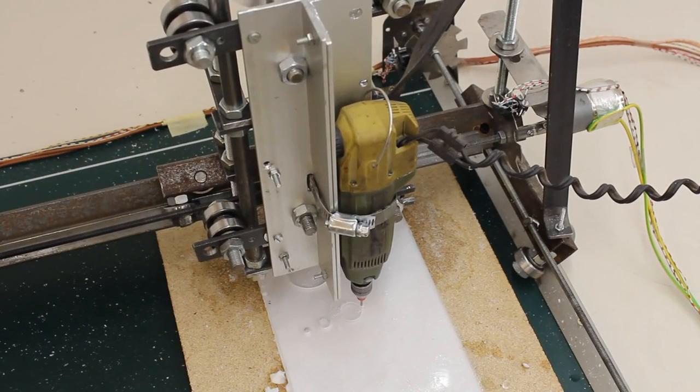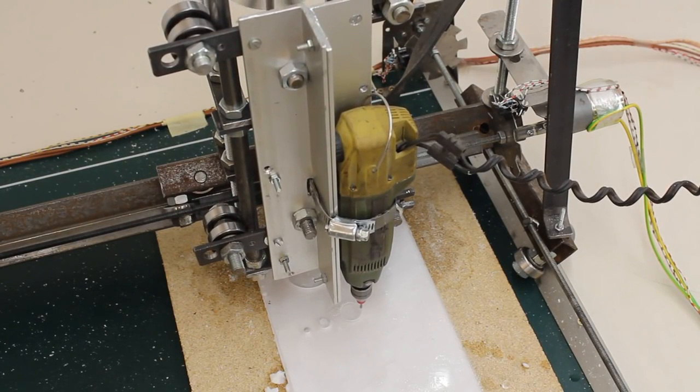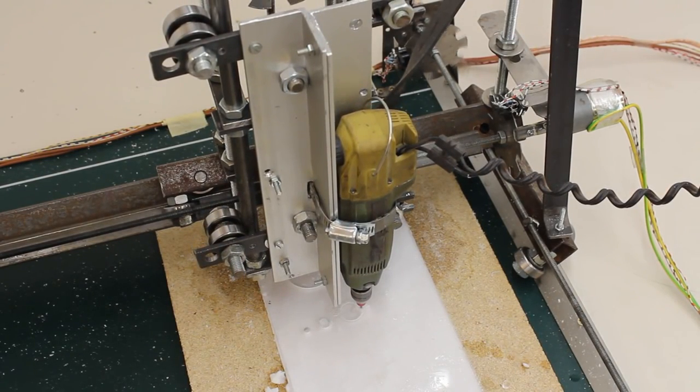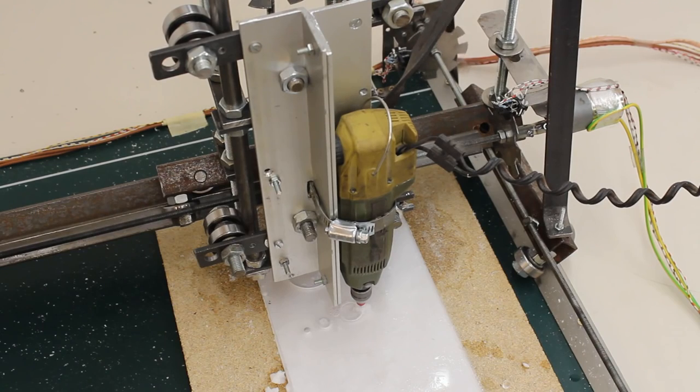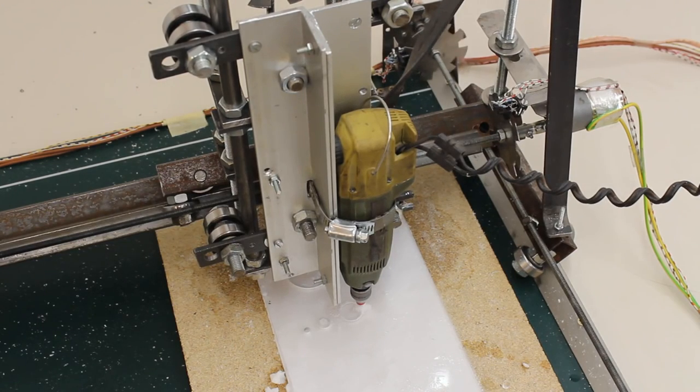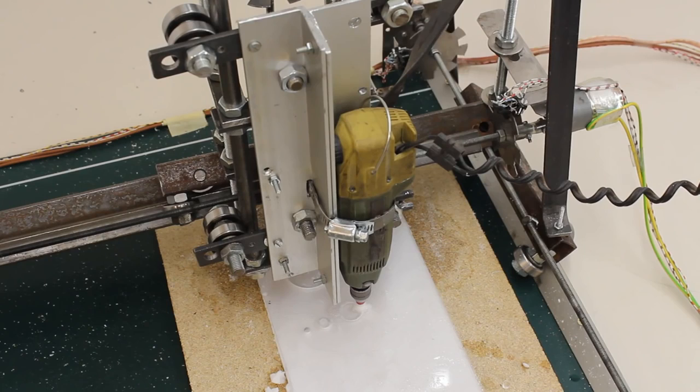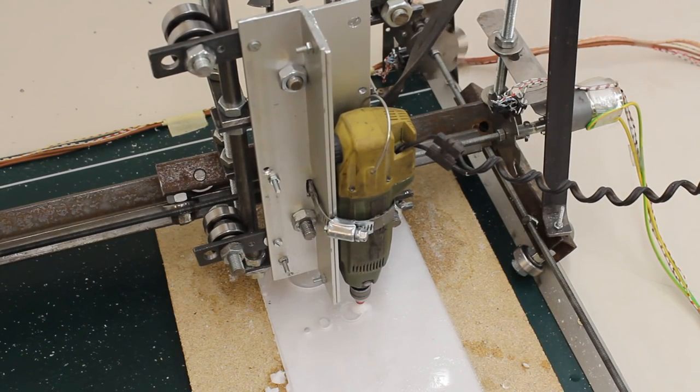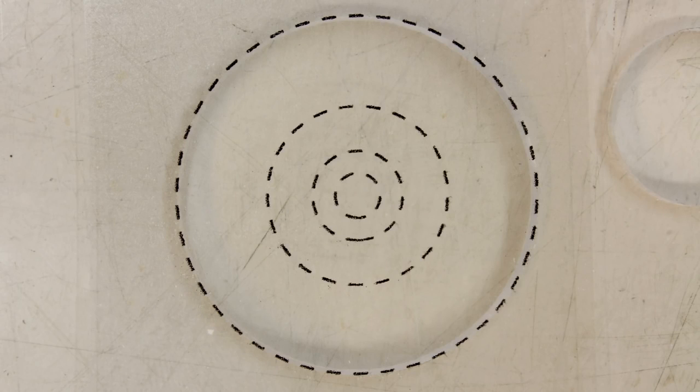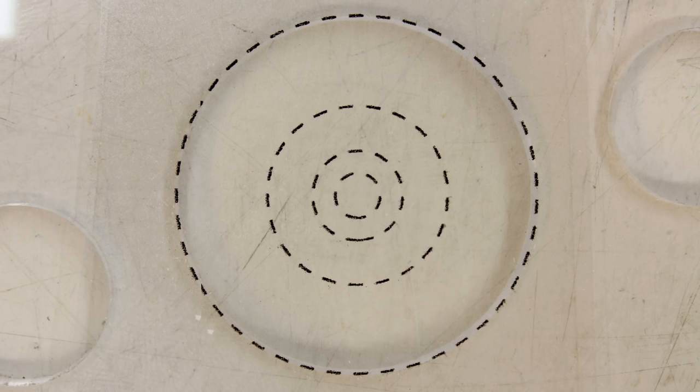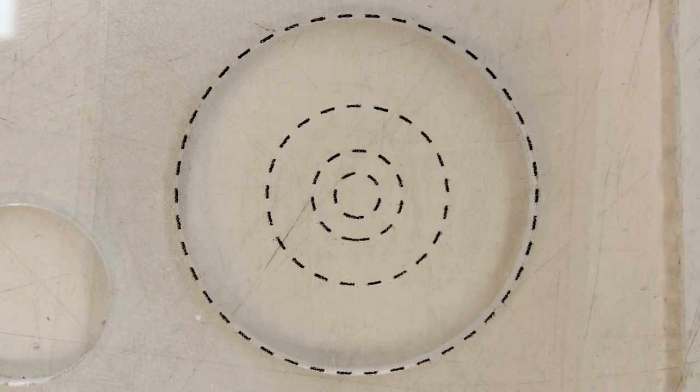The same test pattern is cut at the flexible end of the X and Y axis. Once more I am comparing the result with a pattern printed on a foil. As you can see, the error is just a fraction of a millimeter. There is no difference determinable between the patterns cut at the hard respectively the flexible end.